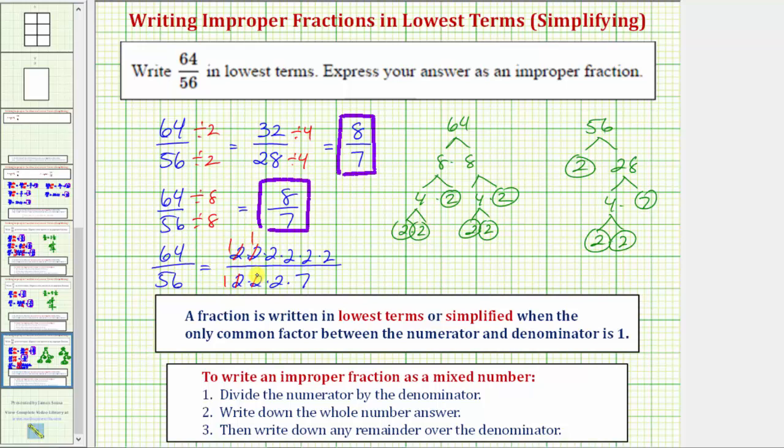The remaining factors give us the fraction in lowest terms. Notice the numerator is now 2 times 2 times 2, which equals 8, and the denominator is just 7.